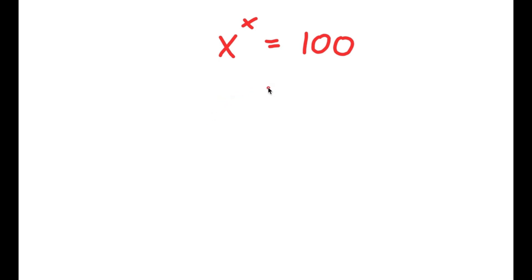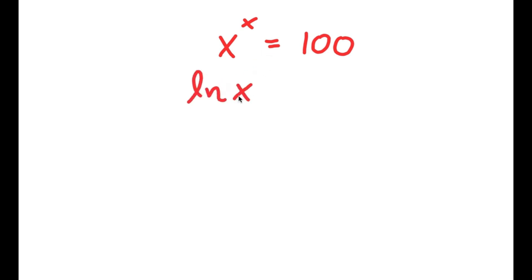So in this problem, I have x to the power of x is equal to 100. I'm going to first start by taking the natural log, or ln, on both sides. So I have ln of x to the power of x is equal to ln 100.